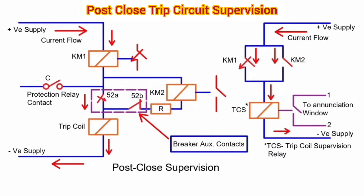Post-close means that the breaker is closed. Current will flow through the breaker auxiliary contact 52A and the trip coil, and relay KM1 will energize. The NO contact of KM1 will become NC and it will energize the TCS relay. The contact of TCS will get open and the annunciation window shows no fault.